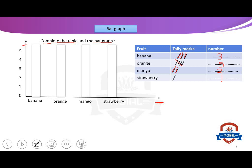Now color with me. Banana — we go up to three. Where is three? Three is here. We put a line and color all of it. After banana, orange. Orange goes up to five. Where is five? Five is here. We put a line and color all of it.